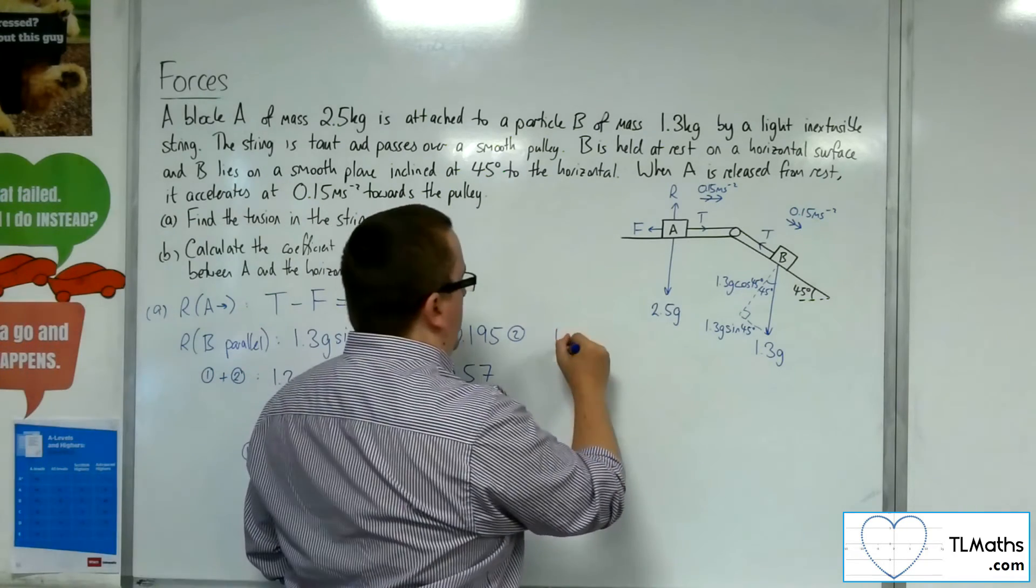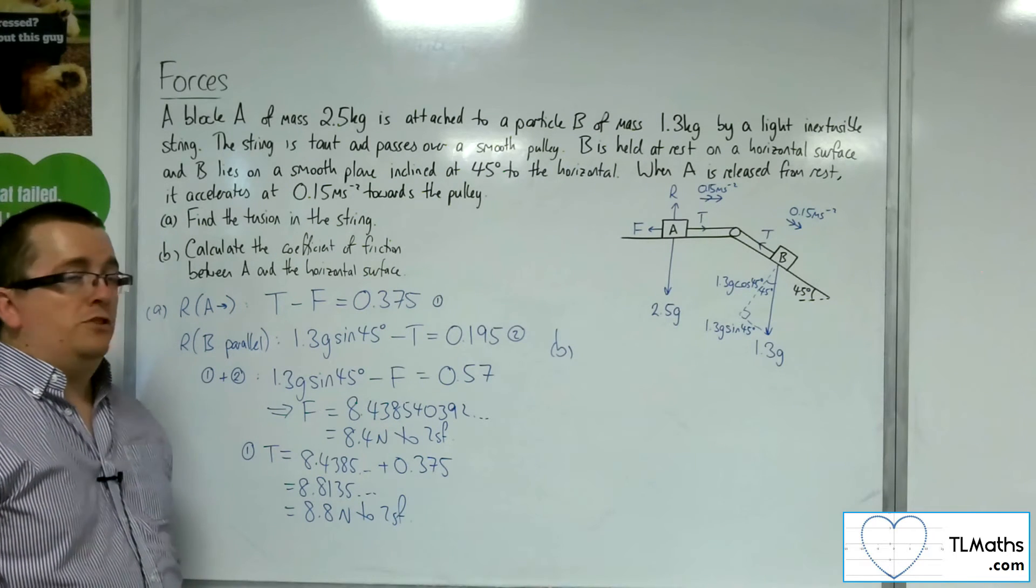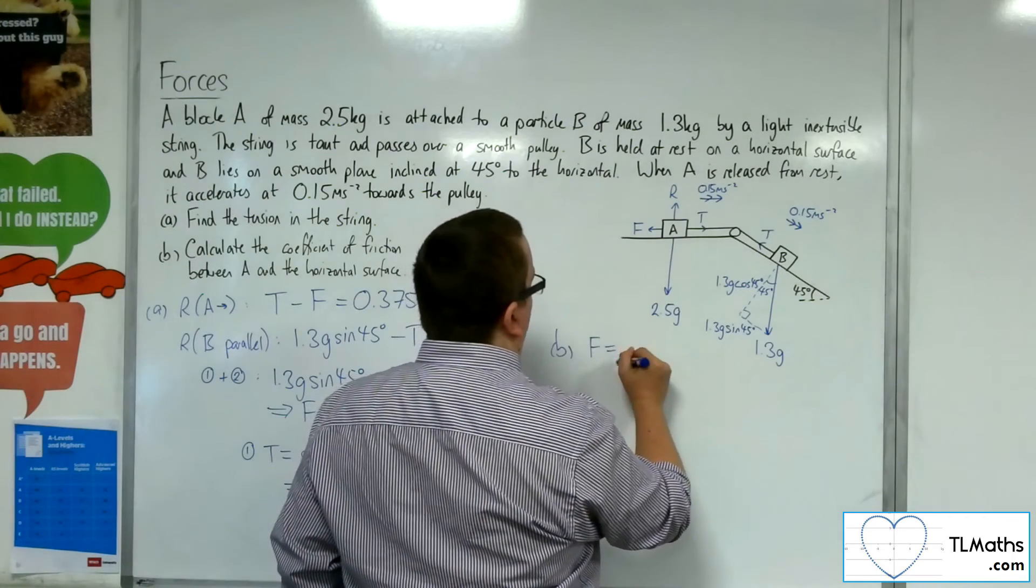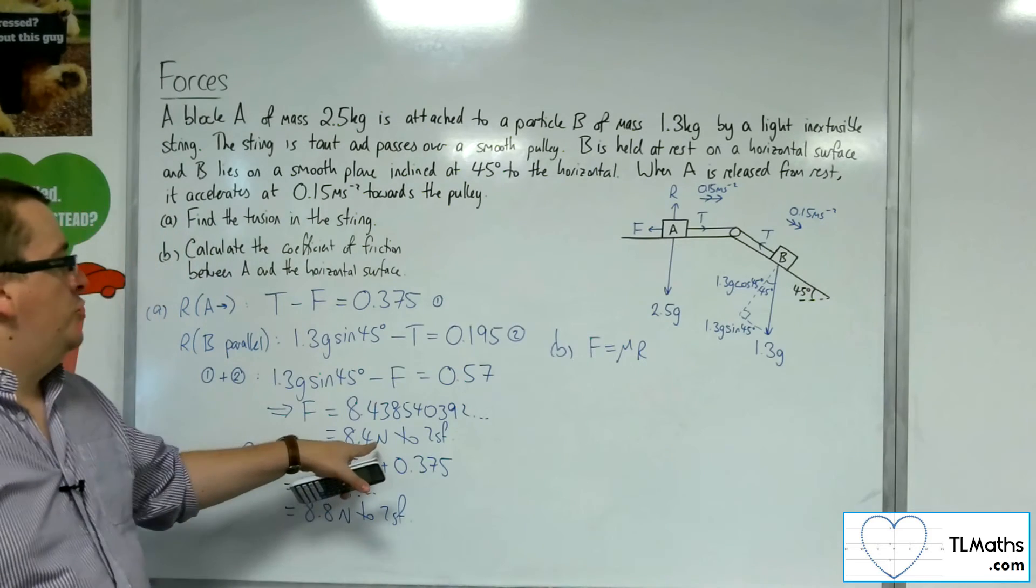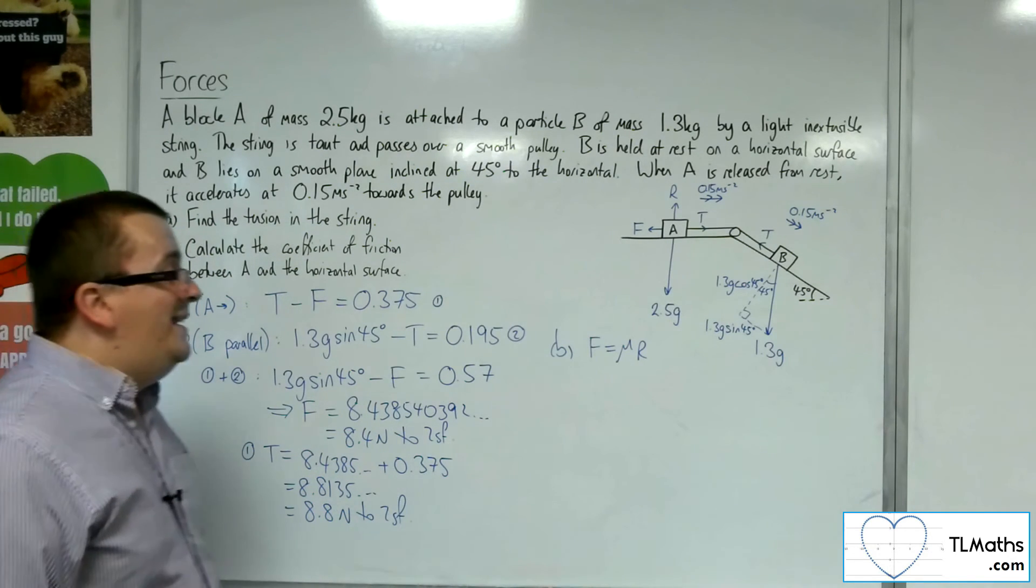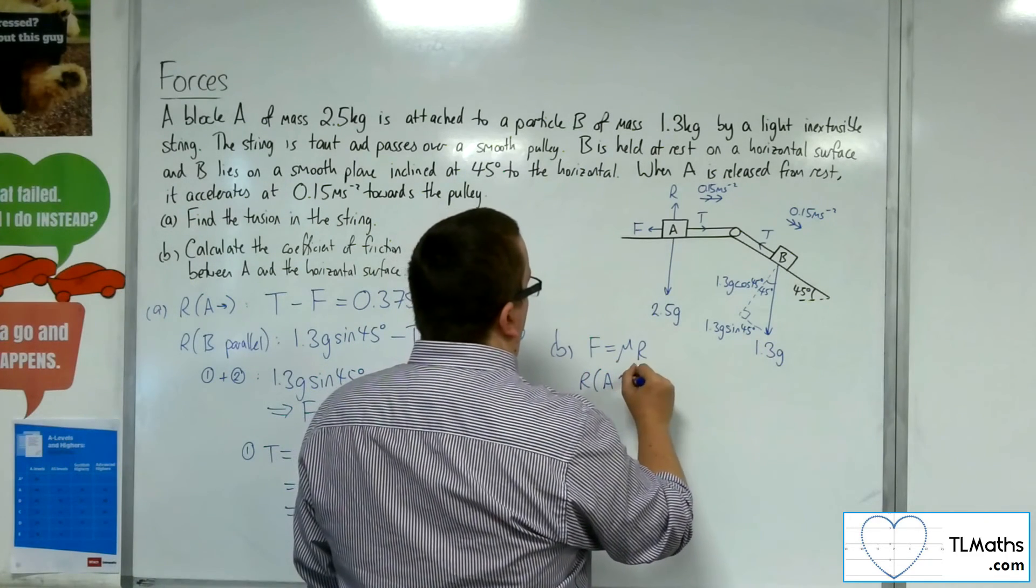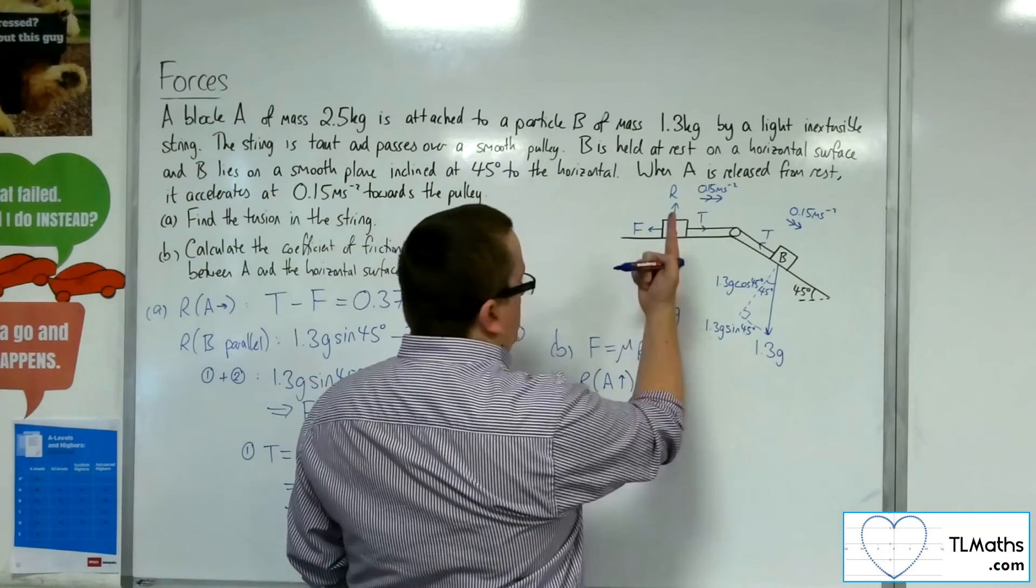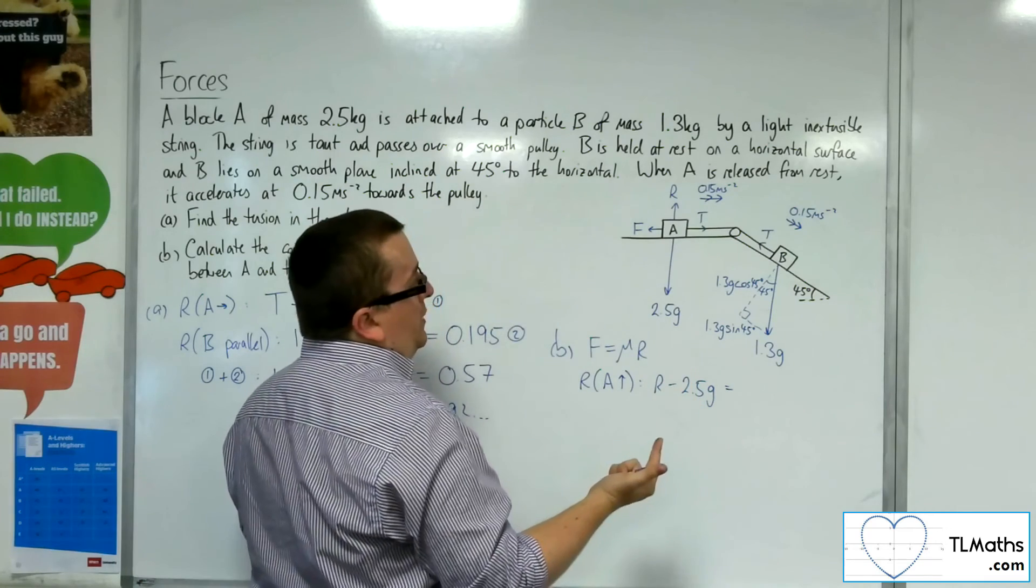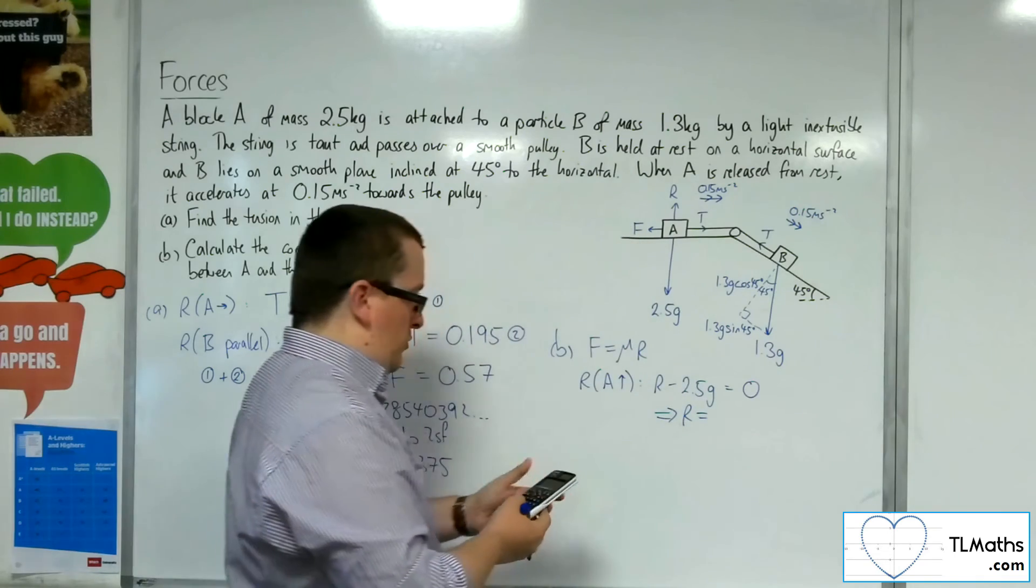Now, as for part B, I'm asked to calculate the coefficient of friction between A and the horizontal surface. Now, because we're accelerating, that means that F is equal to mu times R. Now, I've already got the frictional force through the calculations that I made for part A. So I need the value of R. So if I resolve A taking upwards as positive, then I've got the R, I've got the 2.5g working against me, and there's no acceleration in the vertical direction, and so that's just 0. So R is 2.5 times g.